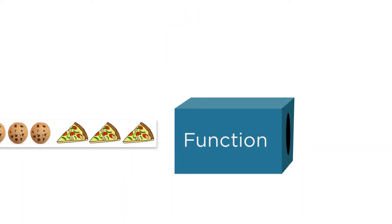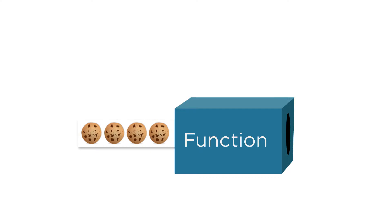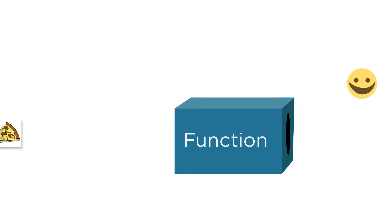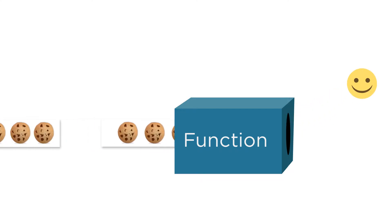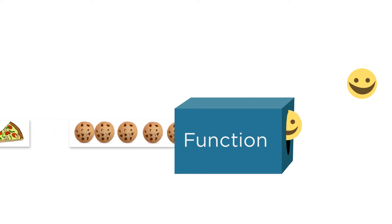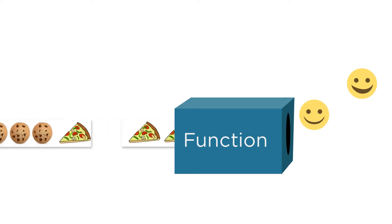Assuming you can't buy fractions of pizza slices or cookies, there aren't that many combinations of pizzas and cookies to try. But in the real world, this brute force approach is rarely feasible. There could be hundreds or thousands of possible combinations to try, and it would take forever to go through each one and evaluate your utility.